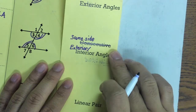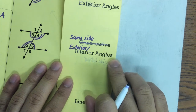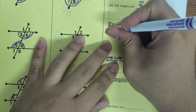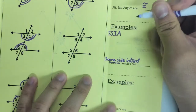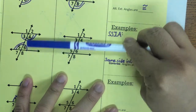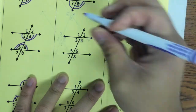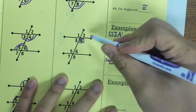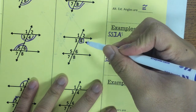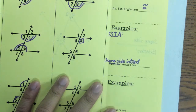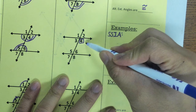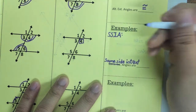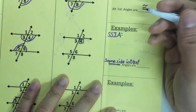Next, we have same side interior and same side exterior angles. Interior angles are three, four, five, and six — in the middle. If I pick angle four, which is on the right side of the transversal, I want the other interior number also on the right side of the transversal, which is six. So four and six are same side interior angles.